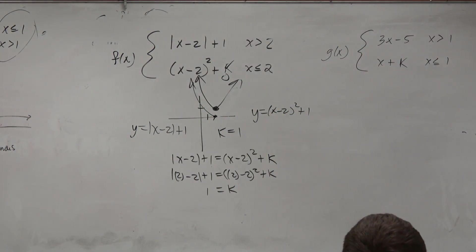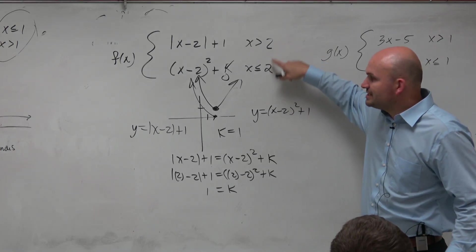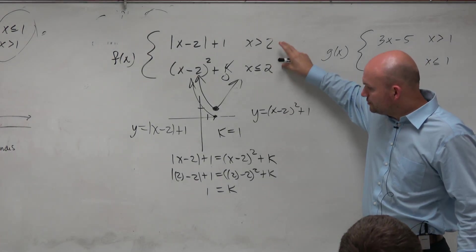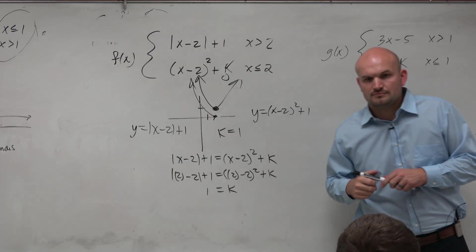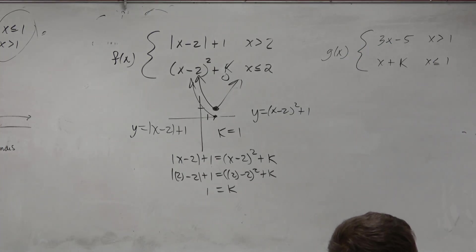How do you know x equals 2 again? Because that's where they're going to be continuous or not continuous. So you plug that in for x, because that's where you want them to be continuous at. Will you plug in a random number? No.